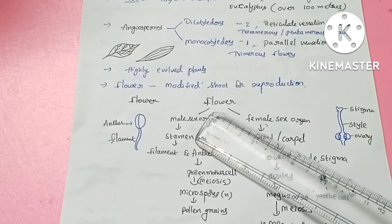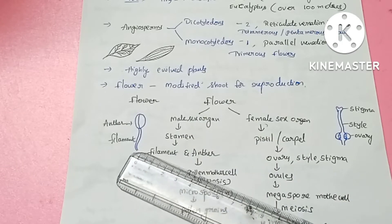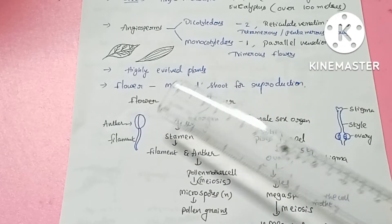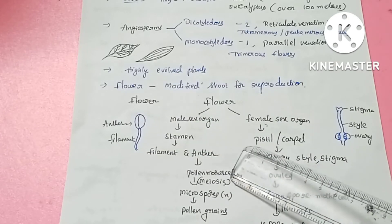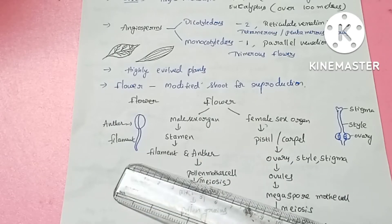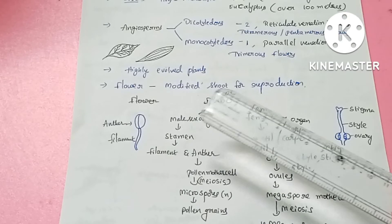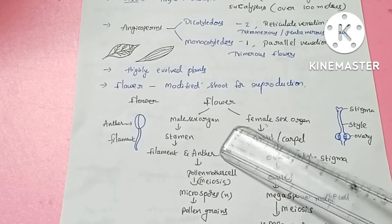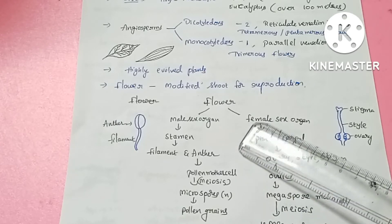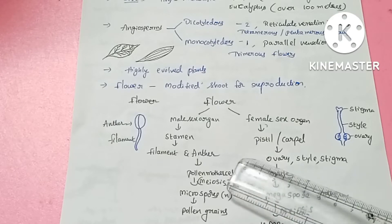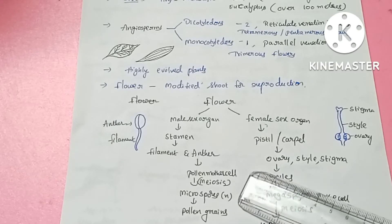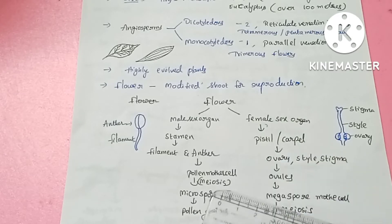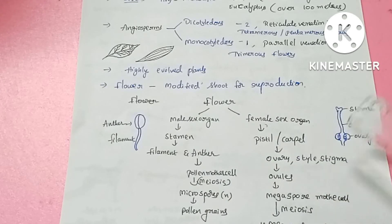The male sex organ is the stamen. The stamen has two parts: the filament and the anther. The anther is a stalk-like structure with a terminal portion containing the pollen mother cell. The pollen mother cell undergoes meiosis and produces microspores, which become pollen grains.